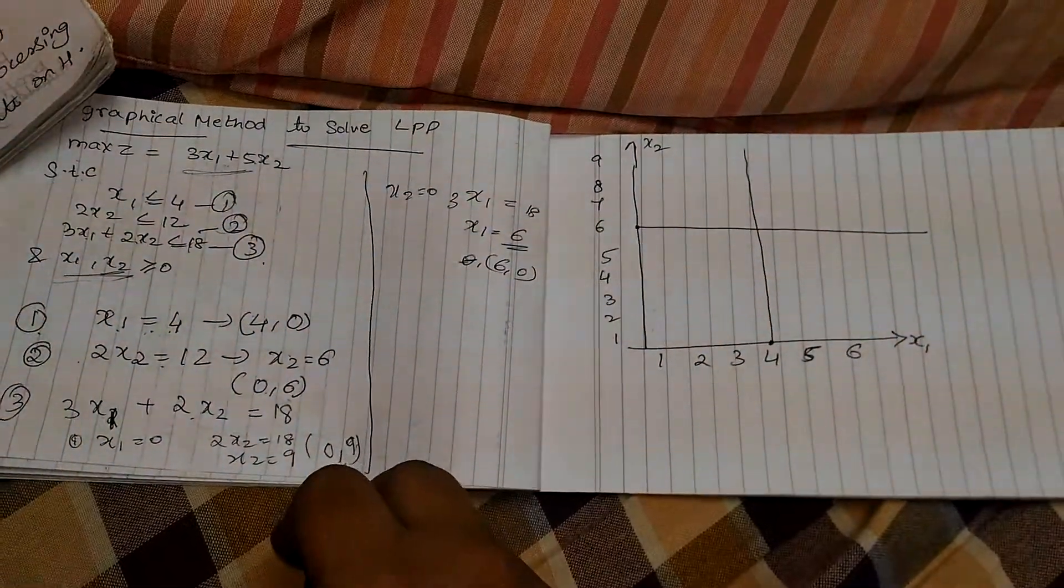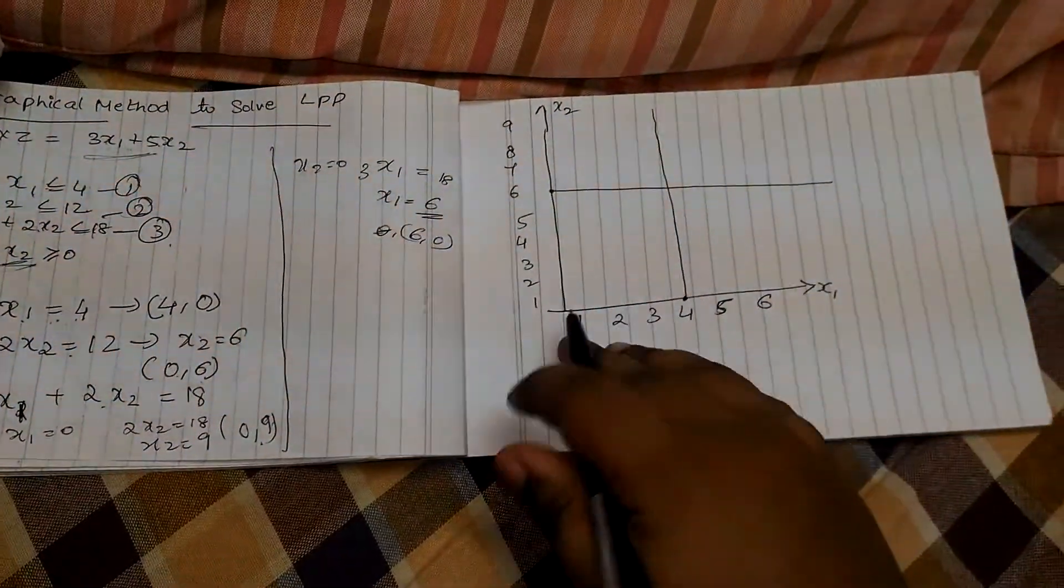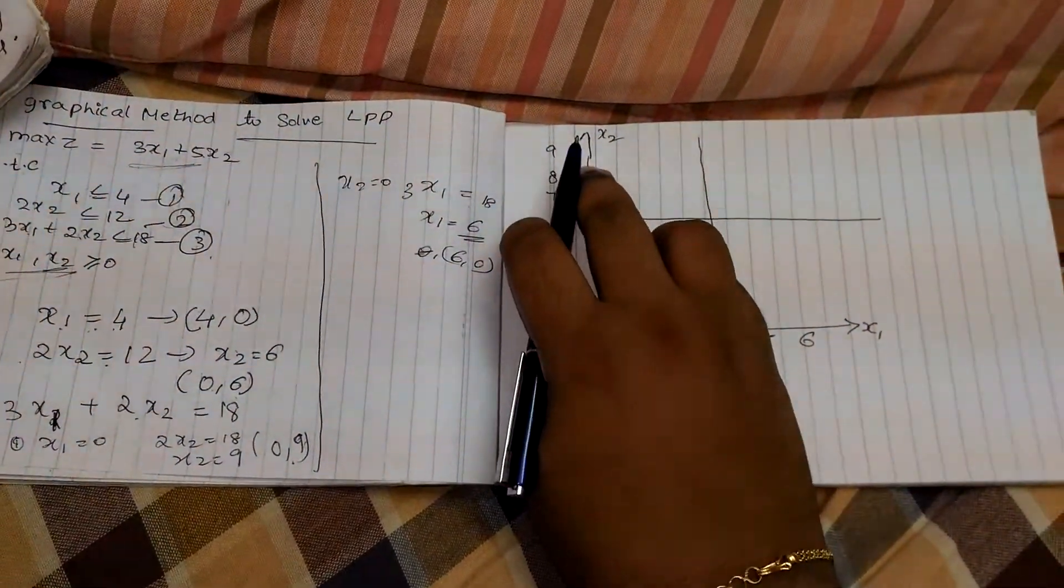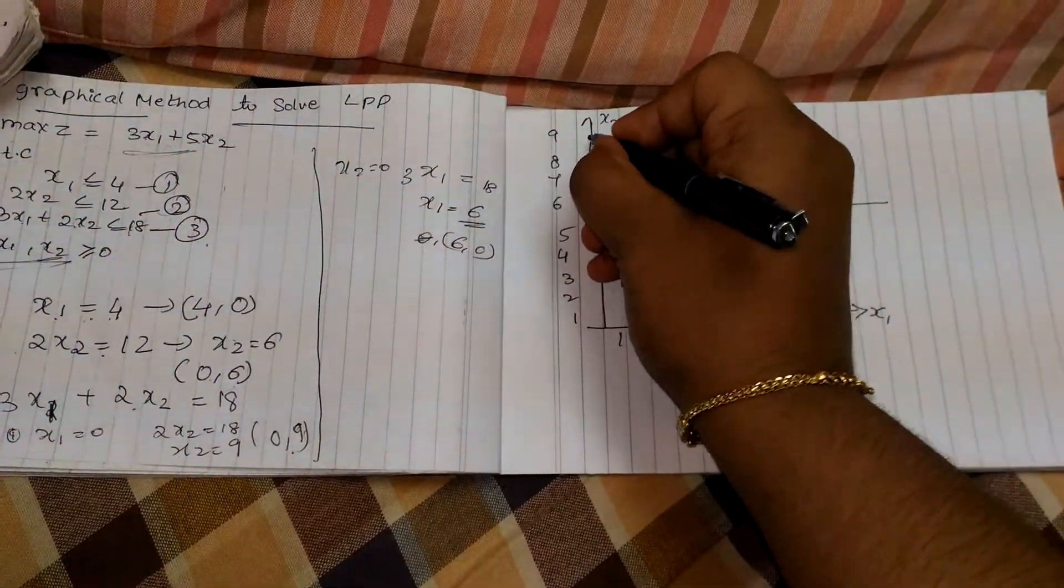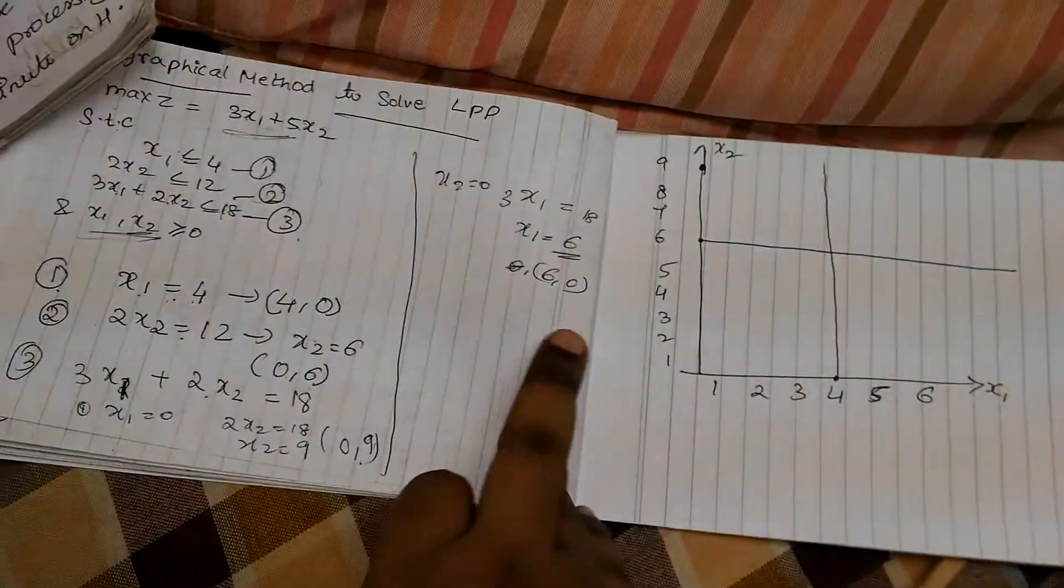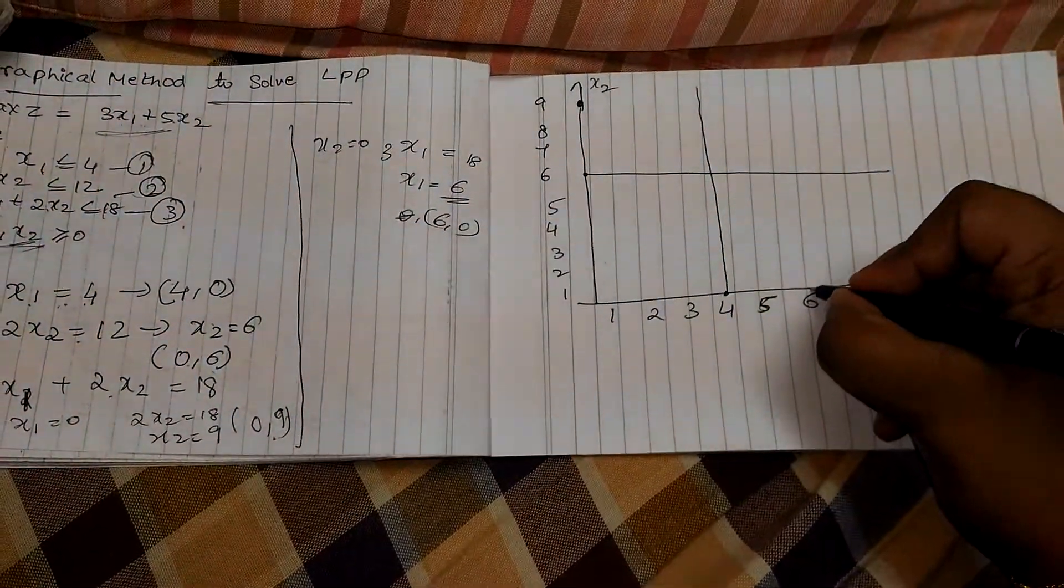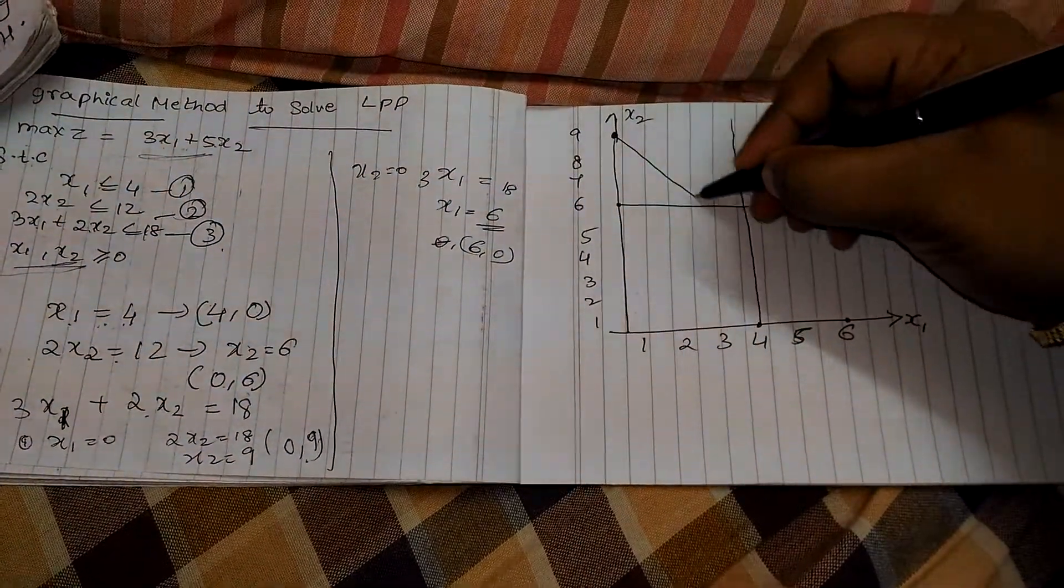The next point is 0, 9. Here it is 0 and here it is 9. So, we mark a point here. And this is 6, 0. We mark a point here. We join these two lines.